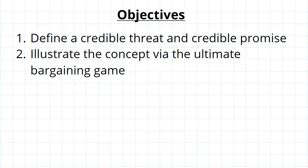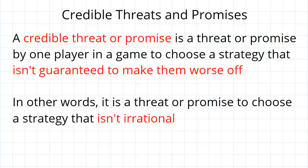One more thing I'd like to introduce is the concept of credible threats and credible promises, which I'll illustrate using what's called the ultimatum bargaining game. A credible threat or promise is a threat or promise by one player in a game to choose a strategy that's not guaranteed to make themselves worse off. An easier way to understand this is to consider the opposite.